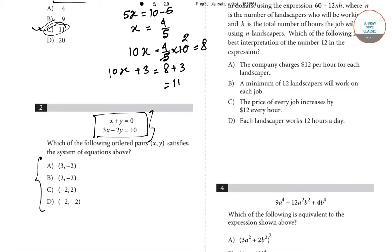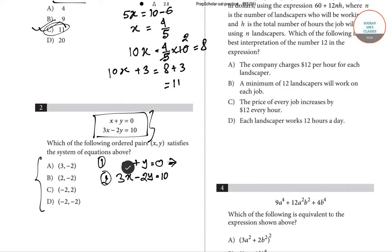To solve the system — equation 1: x plus y equals 0, and equation 2: 3x minus 2y equals 10 — we will apply the elimination method. We multiply equation 1 by 2.